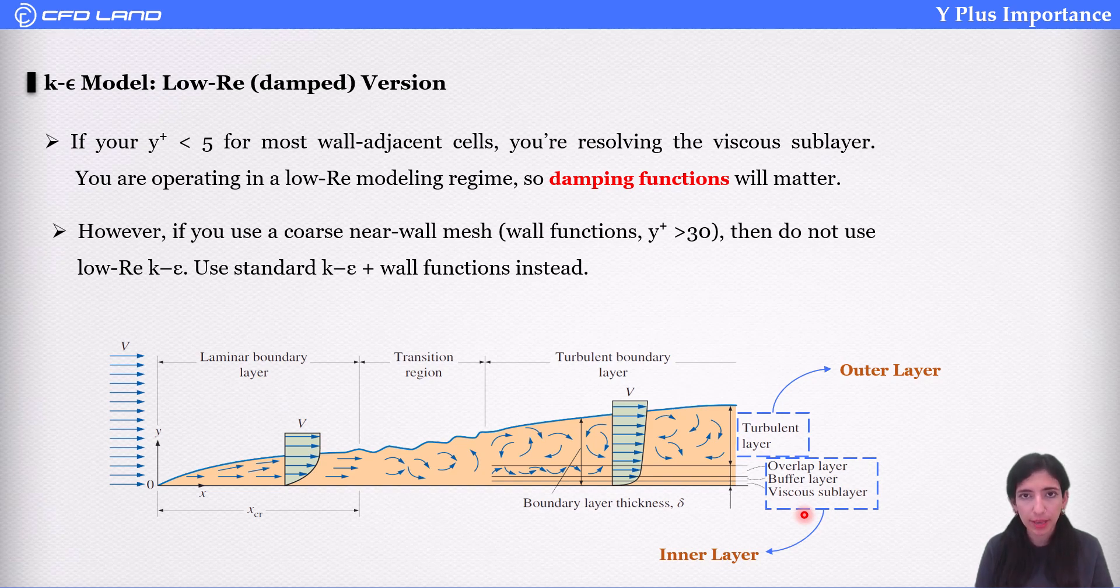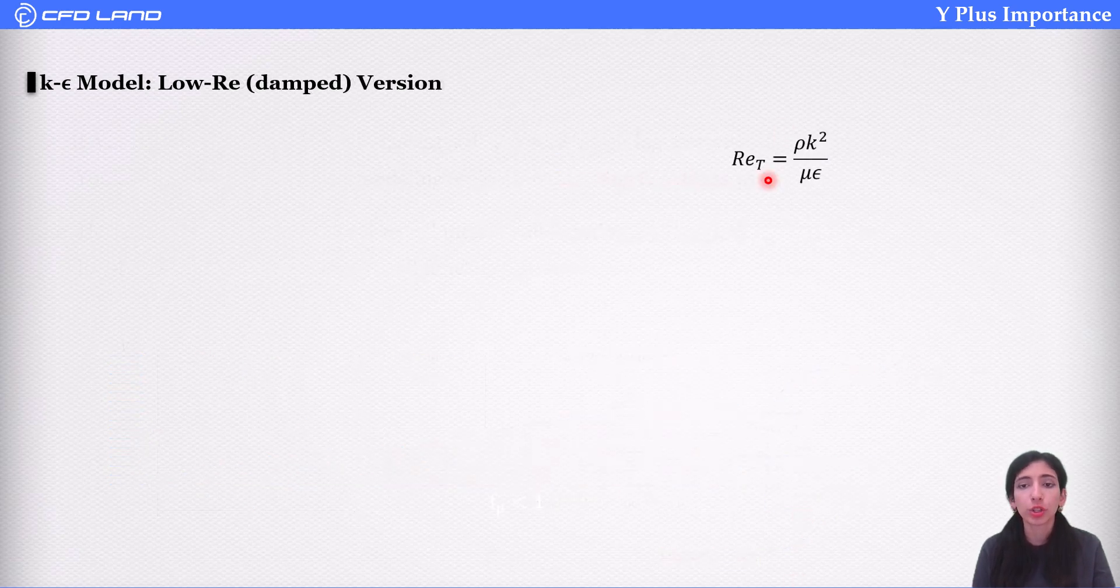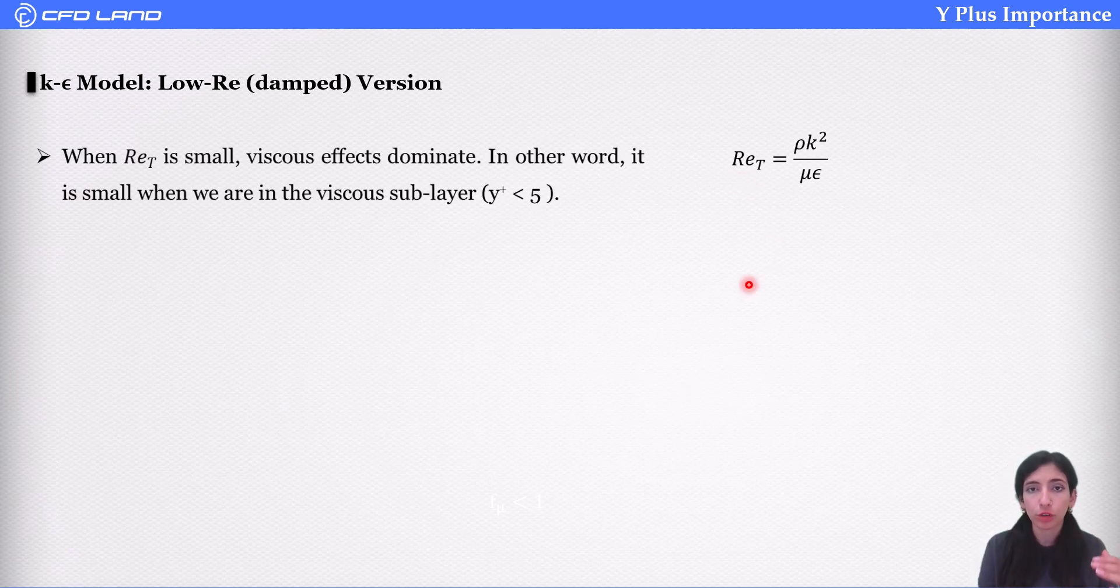Low-Reynolds version of k-epsilon is for when viscous forces are dominant. So, the turbulent Reynolds number shows the ratio of turbulent forces to viscous forces. And when it is low, it means viscous forces are dominant. And it happens in viscous sub-layer, when y-plus is less than 5. So, we need to reduce eddy viscosity or turbulent viscosity. We do it through damping functions.